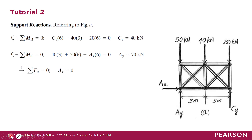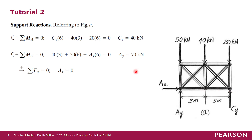So we have Ax, Ay, and Cy. All these directions are assumed in the first place, and we will find out whether our assumption is correct from the solution.